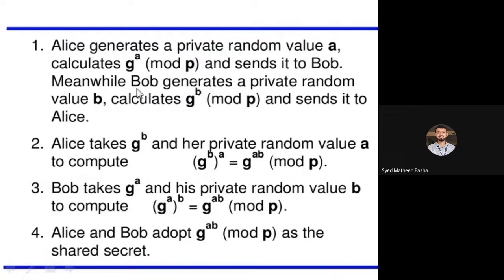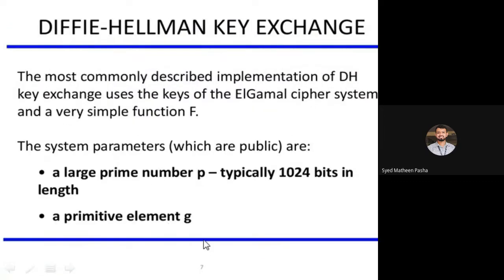We will see how key exchange happens. First, Alice generates a private random value A. Once we have the value of A — any number you can choose — you calculate G to the power of A mod P. We know the values of both G and P. P is a prime number, G is a primitive element. Both will be given in your question.